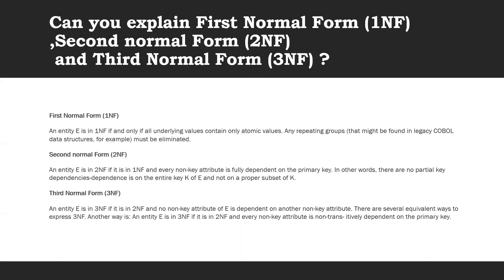An entity is in third normal form if it is in second normal form and no non-key attributes of the entity are dependent on another non-key attribute. Another equivalent expression is that an entity is in third normal form if it is in second normal form and every non-key attribute is non-transitively dependent on the primary key.